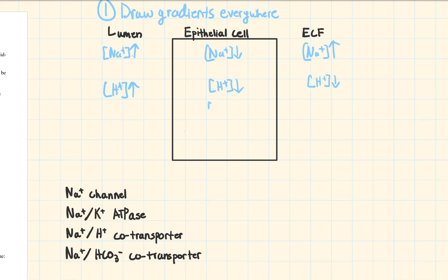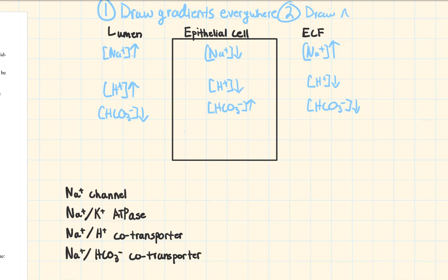For bicarb, the chart says it is concentrated inside of the cell, which means it's low everywhere else. If it only tells you where something is high, that means it's low everywhere else. That's step one. Step two is to draw your absorption and secretion goals.